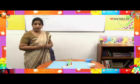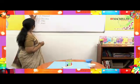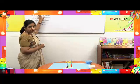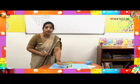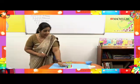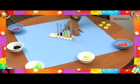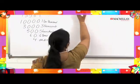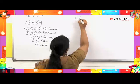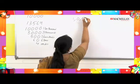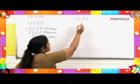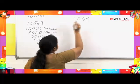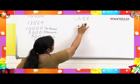So easy, wasn't it? You can represent any number on the abacus like this, see its placement, convert it into expanded form, and read the number. Now let me ask you something very interesting. Suppose I have these 4 digits: 1, 0, 5, and 3.